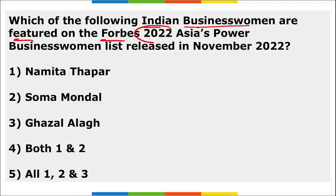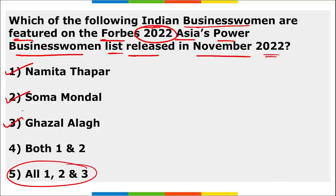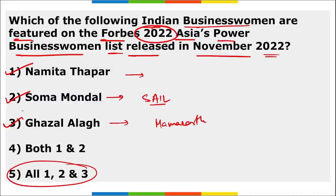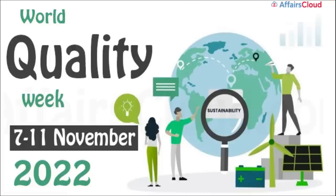Which Indian businesswomen were featured on the Forbes 2022 Asia Power Businesswomen list released in November 2022? The three businesswomen from India are: Soma Mandel, chairperson of Steel Authority of India Limited (SAIL); Ghazal Alagh, co-founder and chief innovation officer of Honasa Consumer Private Limited, also known as Mama Earth; and Namita Thapar, executive director of Emcure Pharma.